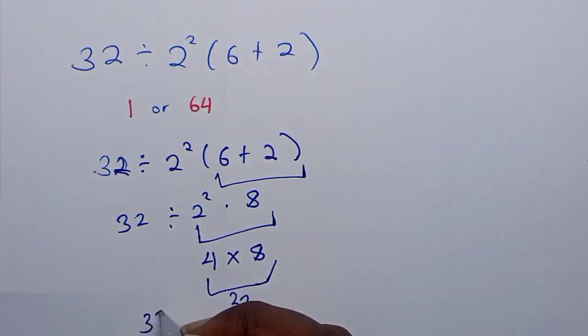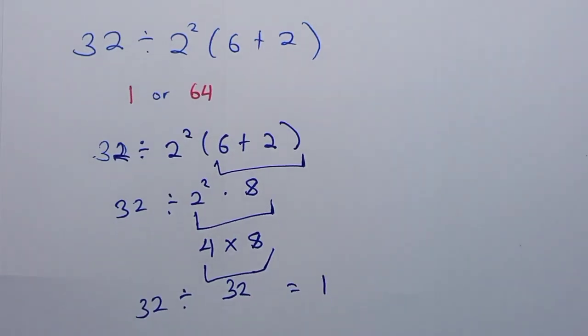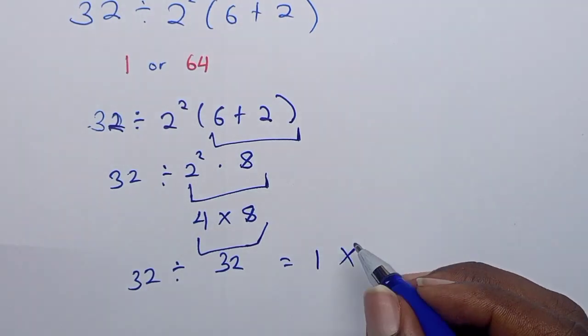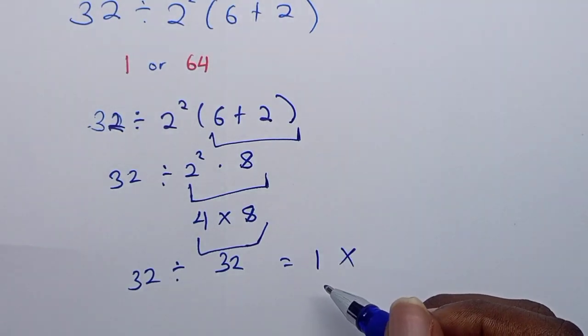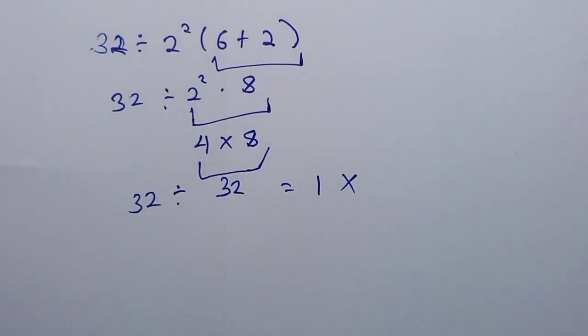So 32 divided by 32 equals 1. If you got 1 as your answer, you are wrong. This is not right because you do not follow the right order of operations. You have to follow the order of operations, which is PEMDAS.